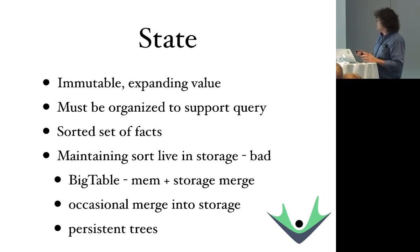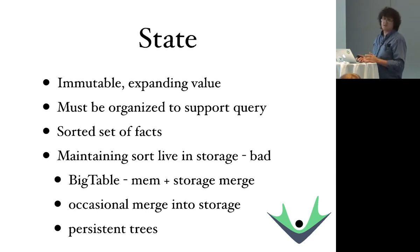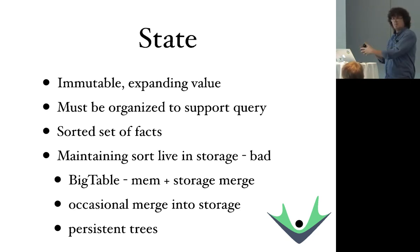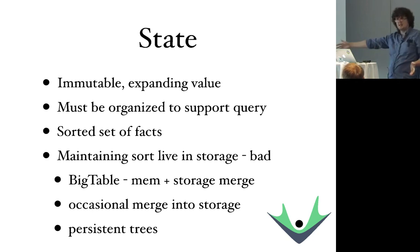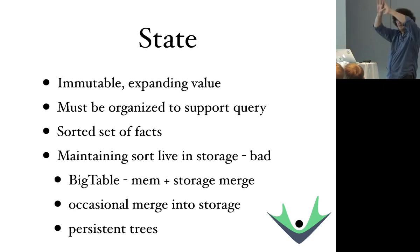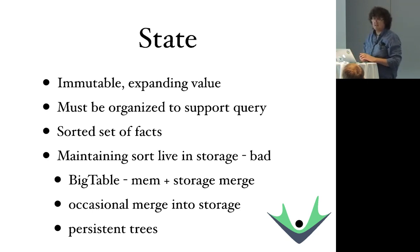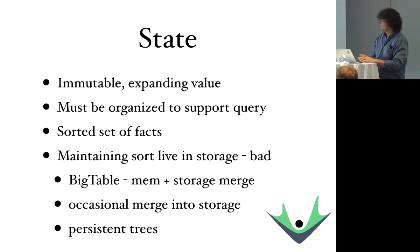One of the things that's really important is to learn the lessons of Bigtable. What Bigtable showed us was maintaining sort and maintaining an index live on disk is a bad idea — incredibly inefficient. You keep rewriting the head of something. What you want to do instead is accumulate change and then merge it periodically. Bigtable accumulates a bunch of stuff, keeps a sorted set in memory and a sorted set on disk, and then periodically merges from memory to disk. When you ask it a question, it answers by giving you a live merge of memory plus disk. The same strategy applies here.